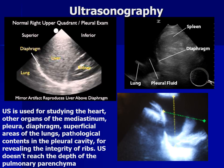Ultrasonography. Ultrasound is used for studying the heart, other organs of the mediastinum, pleura, diaphragm, superficial areas of the lungs, pathological contents in the pleural cavity, and for revealing the integrity of ribs. Ultrasound does not reach the depth of the pulmonary parenchyma. On one image we see the normal right upper quadrant — diaphragm, liver, kidney, and a part of lung. On another image we see pleural fluid visible in the sinus of the lung. Using ultrasound we can even measure the volume of the fluid in the pleural sinus.